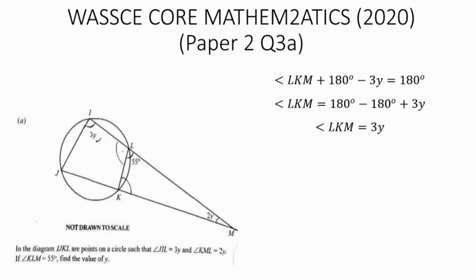From triangle LKM, we have angle LKM plus angle KLM plus angle KML supposed to be equal to 180 degrees. Since it forms a triangle, we have angle KLM, which is equal to 55 degrees, plus angle KML, which is equal to 2Y, plus angle LKM, which is equal to 3Y, equals 180 degrees. Simplifying this gives us 2Y plus 3Y, which is 5Y, equals 180 degrees minus 55 degrees. So we have 5Y equals 125 degrees, divided by 5 by making Y the subject, which gives us Y equals 25 degrees.